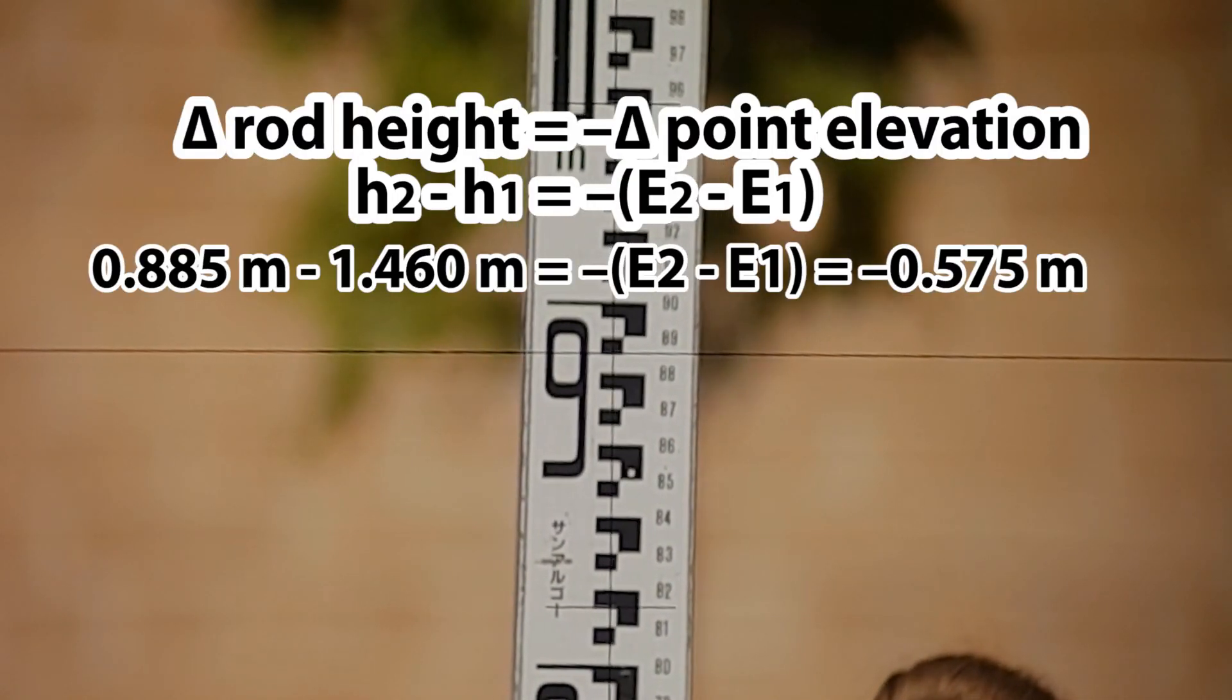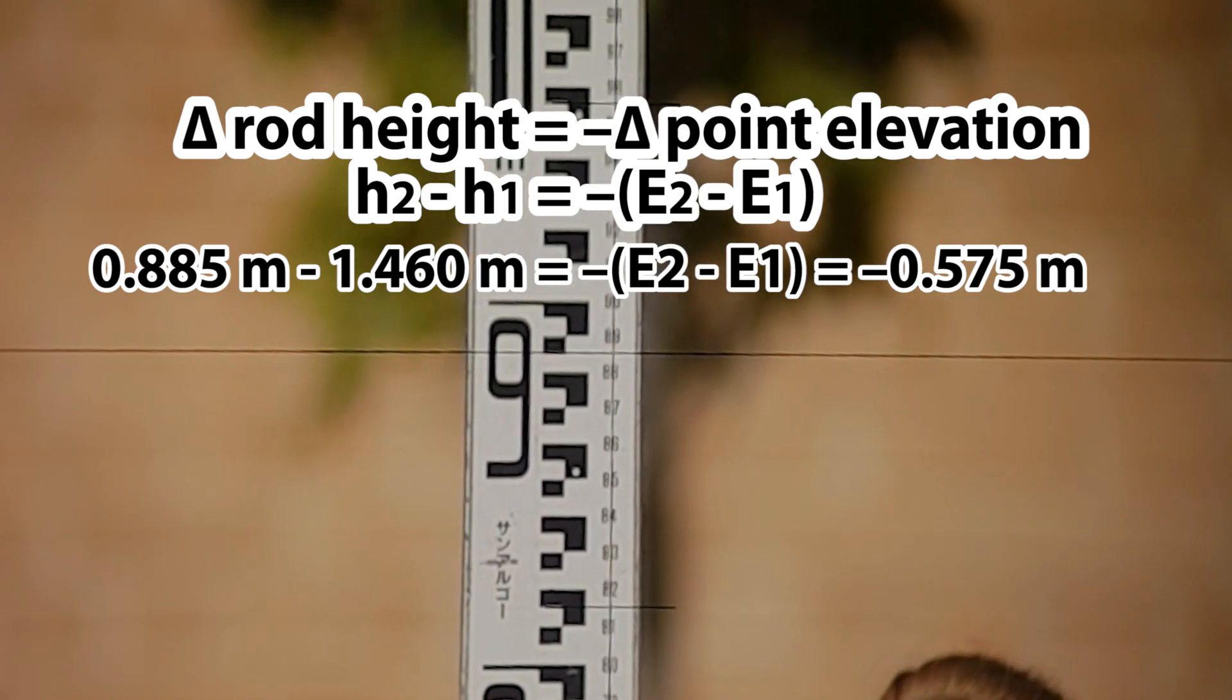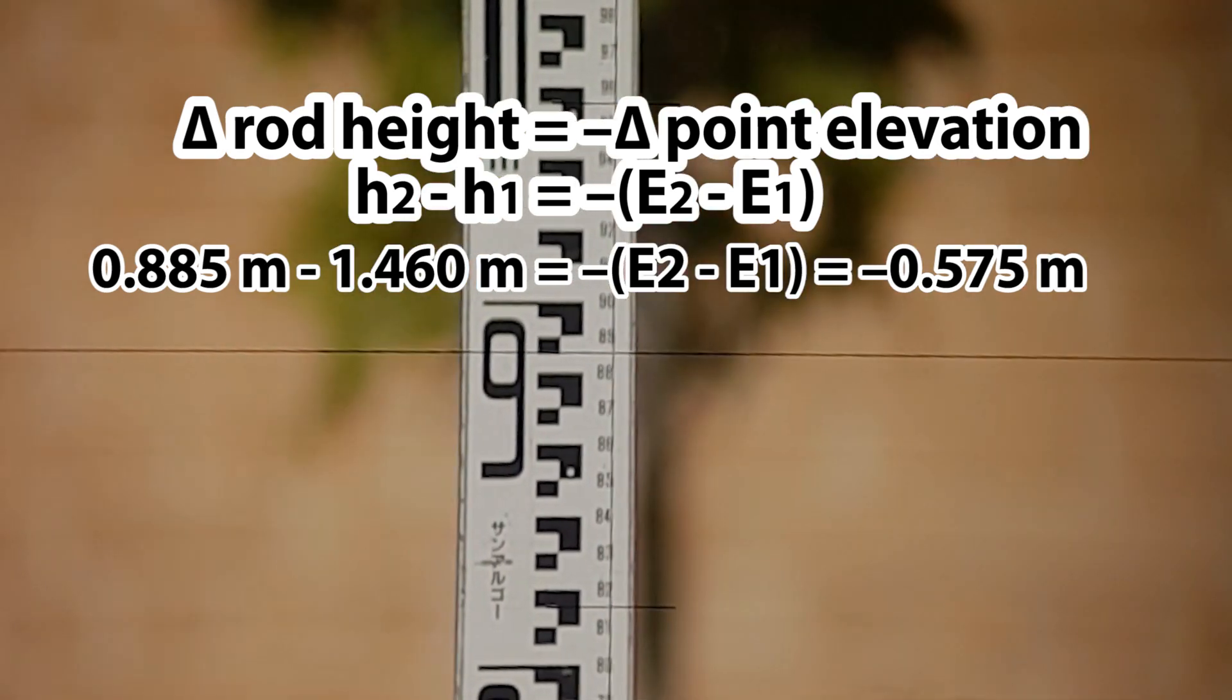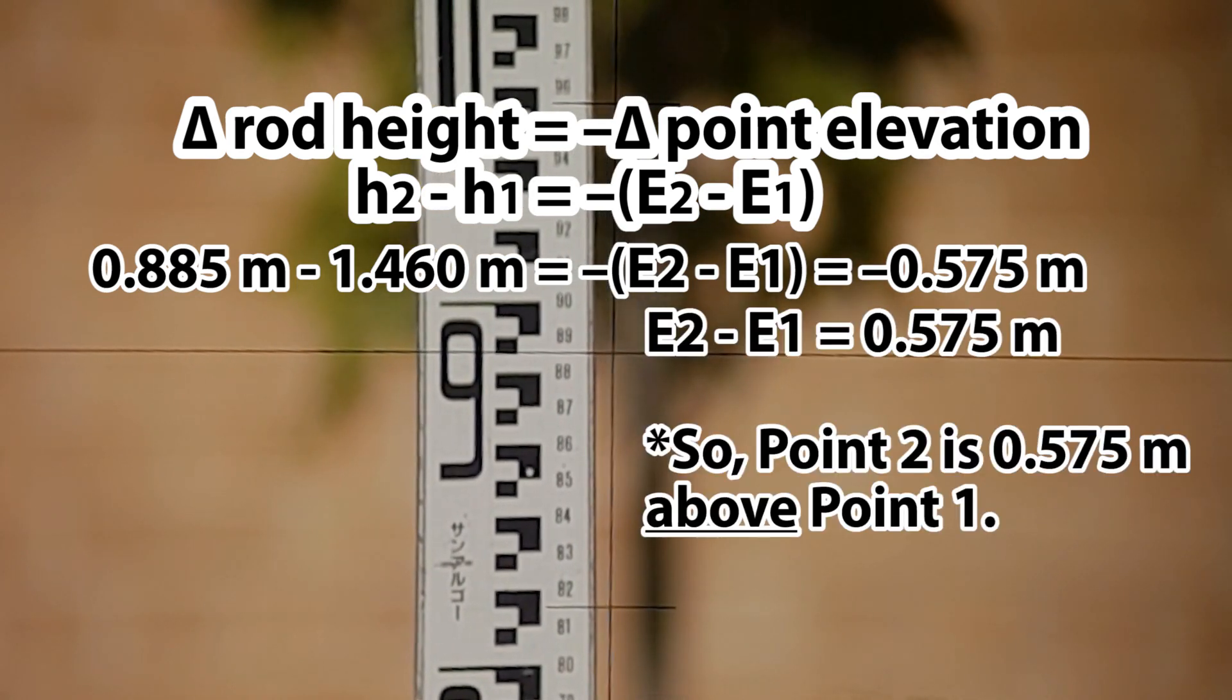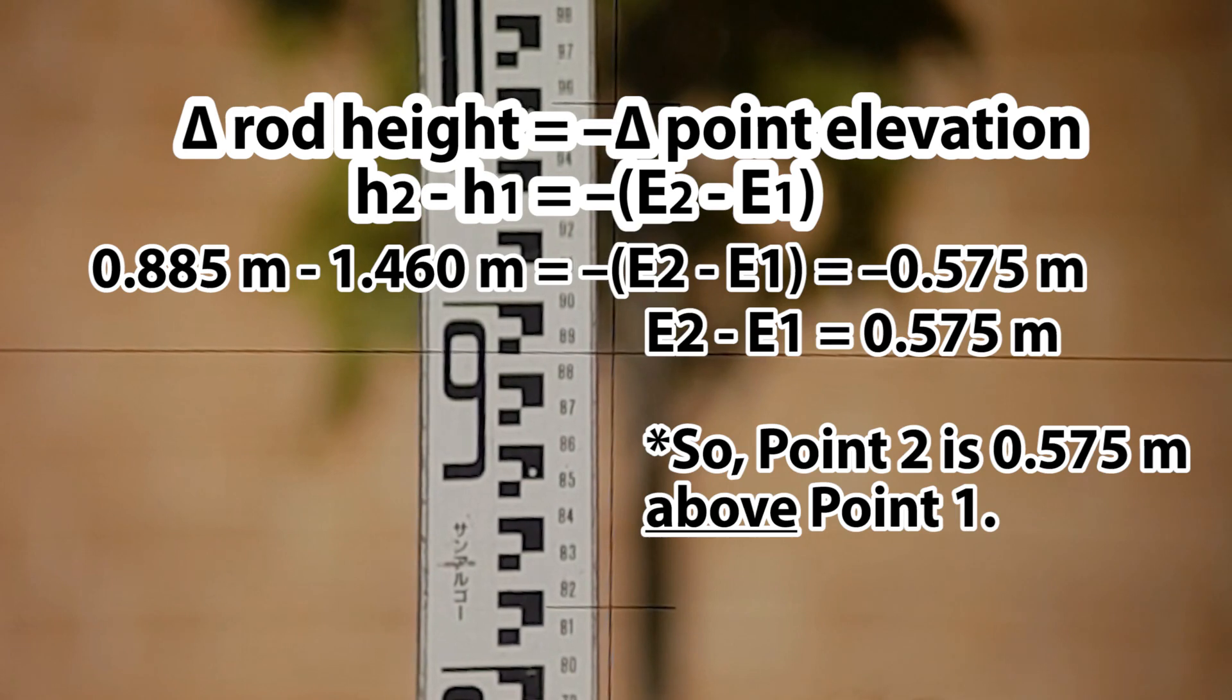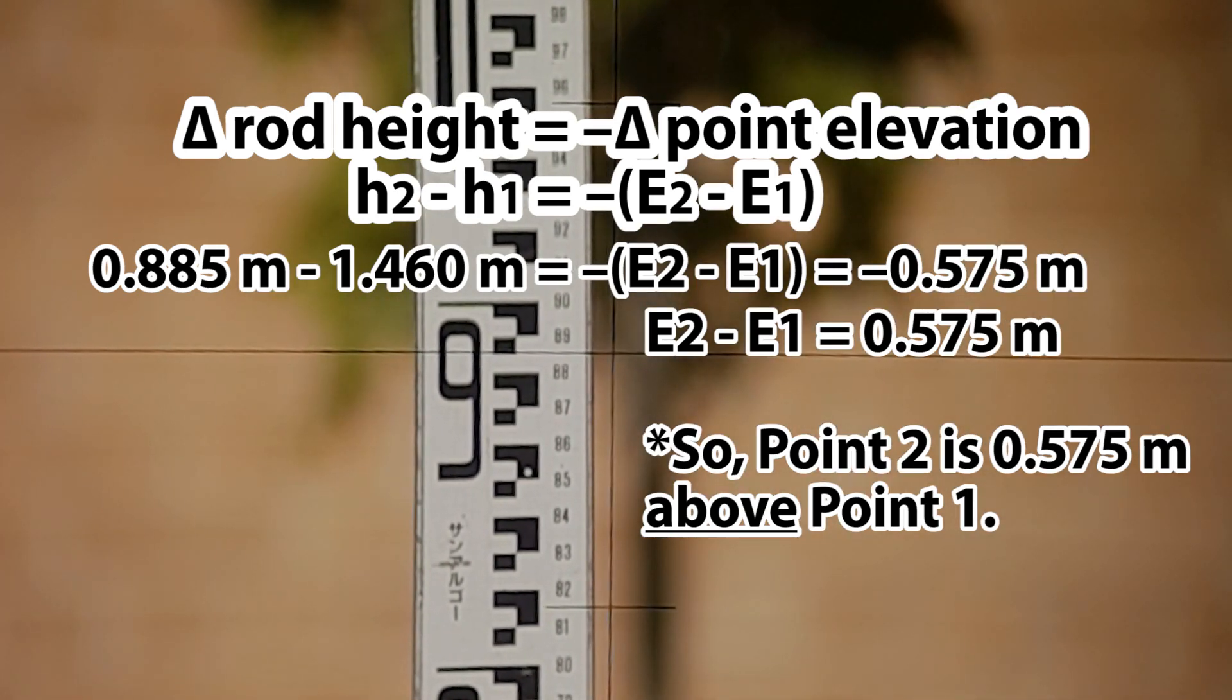So 0.885 is this reading, and 1.460 was our previous reading. The difference between is 0.575 meters. So 0.2 is 0.575 meters above 0.1. And that's just how you take a reading with the level and level rod.